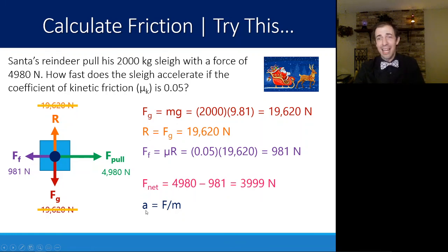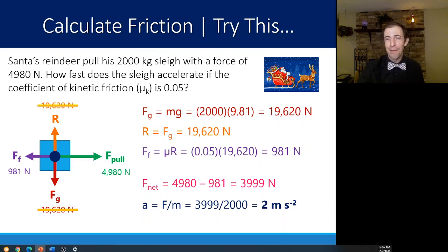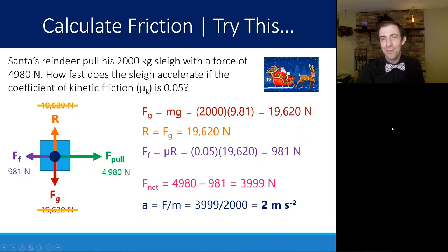Rearranging, a is just equal to F divided by m. The net force is almost 4,000 here, divided by 2,000 kilograms gives me an acceleration of about 2 meters per second squared.